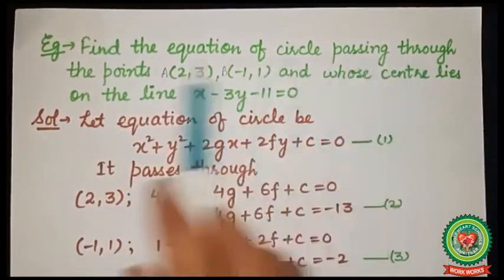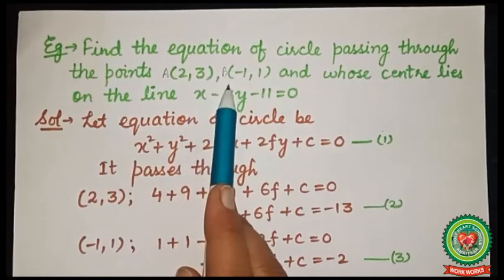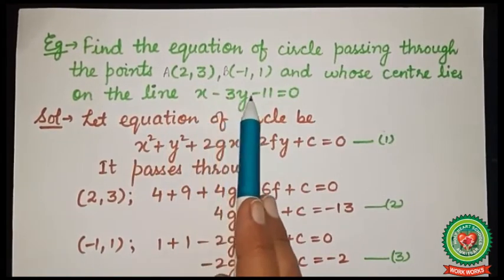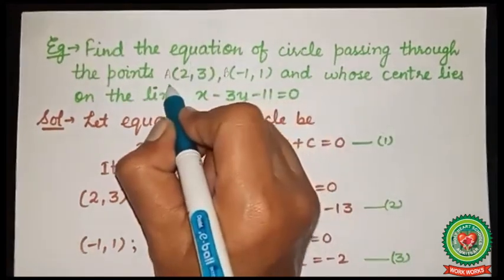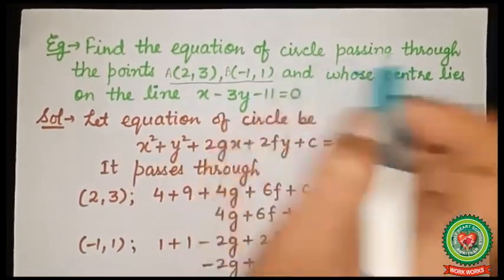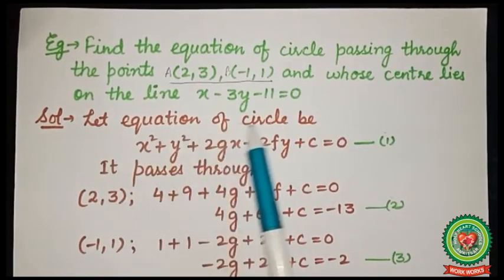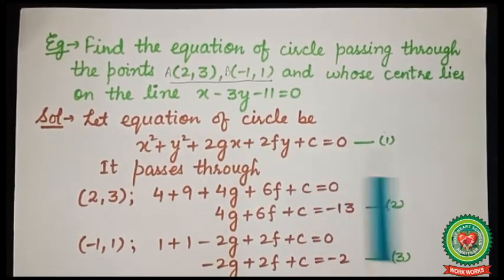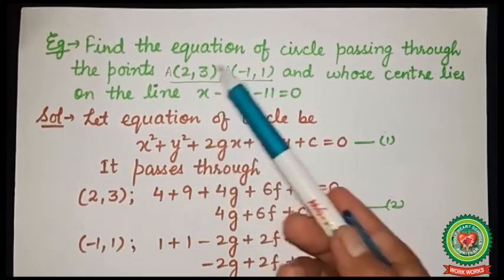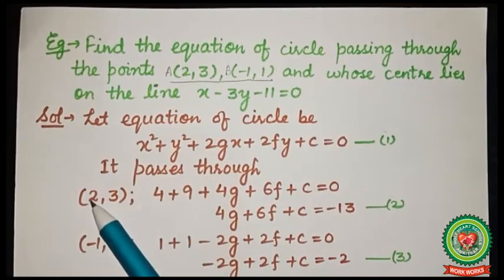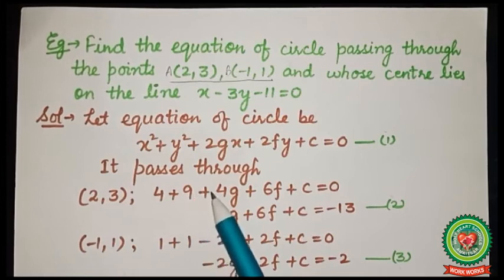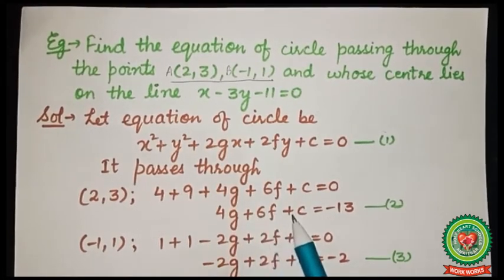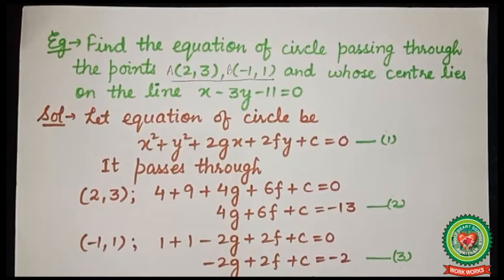Find the equation of the circle passing through points A (2, 3) and B (-1, 1) whose center lies on the line x - 3y - 11 = 0. Starting from the general equation x² + y² + 2gx + 2fy + c = 0, substituting point A (2, 3): 4 + 9 + 4g + 6f + c = 0, giving 4g + 6f + c = -13. Mark this equation 2.